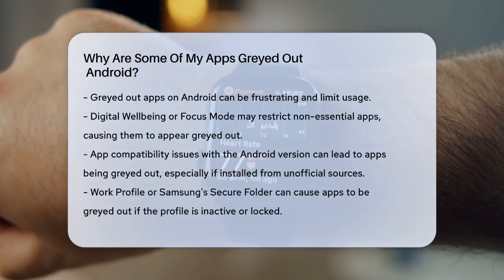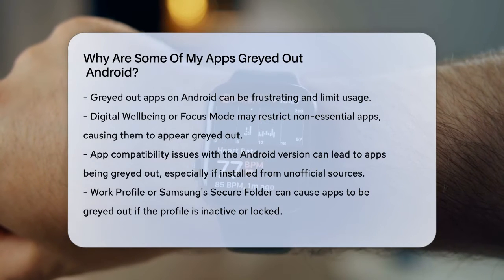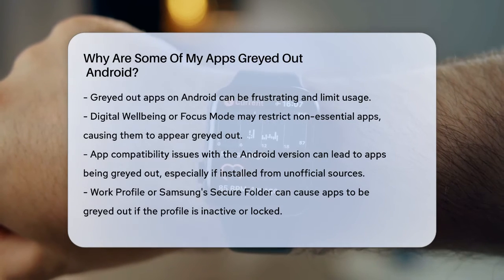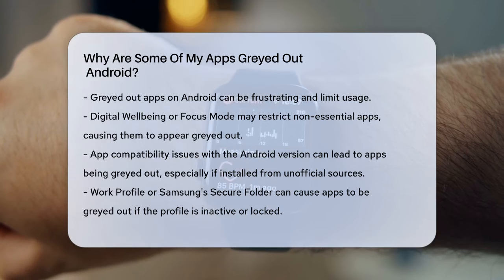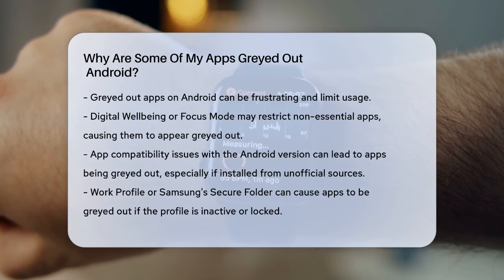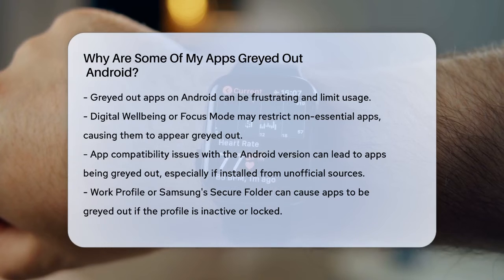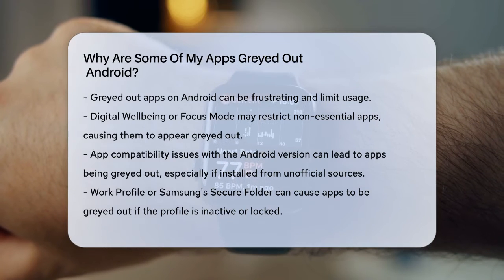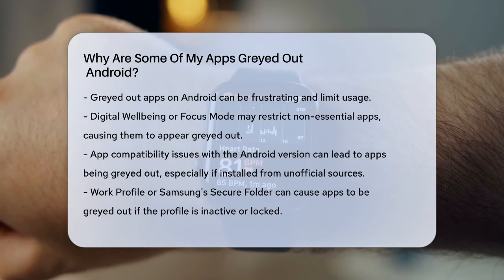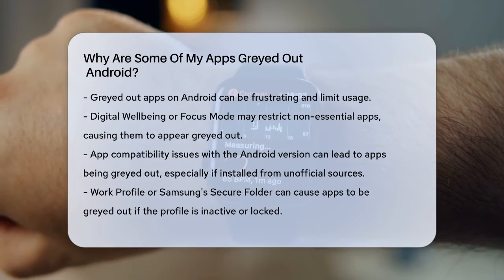One common reason is that your device's digital well-being or focus mode might be active. These features can restrict non-essential apps to help you stay focused or manage your screen time. If focus mode is on, you might see some apps grayed out until you turn it off or adjust the settings.